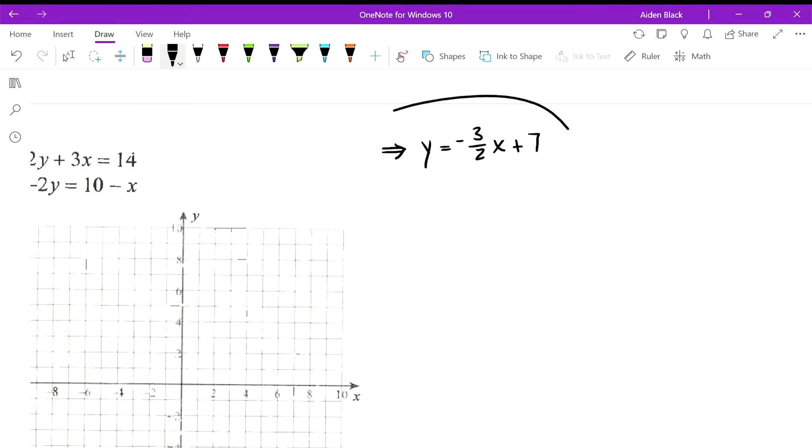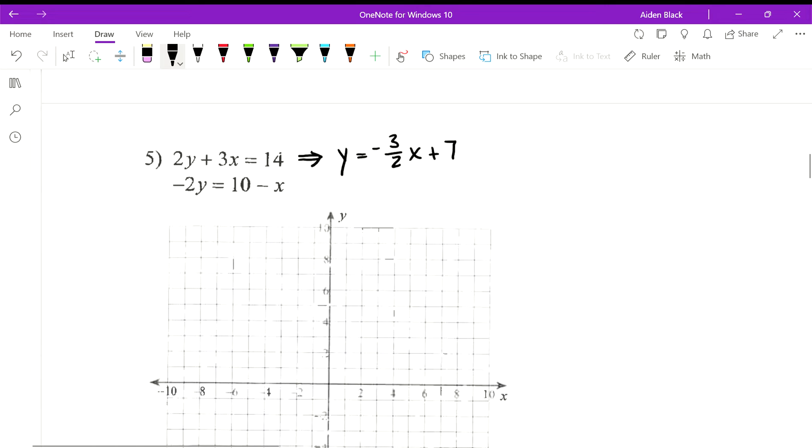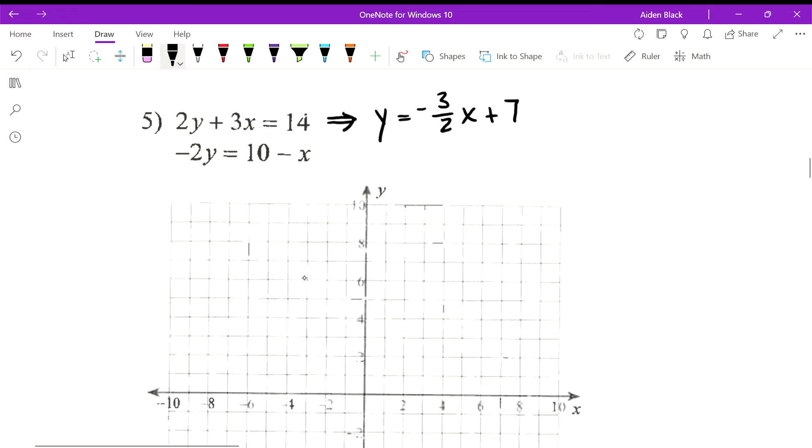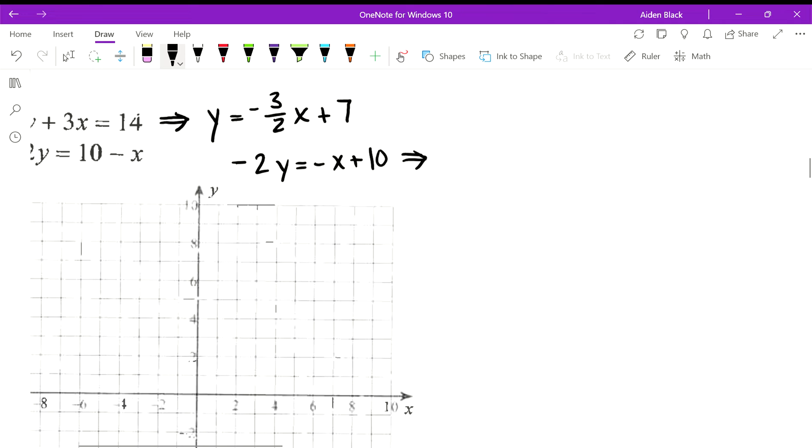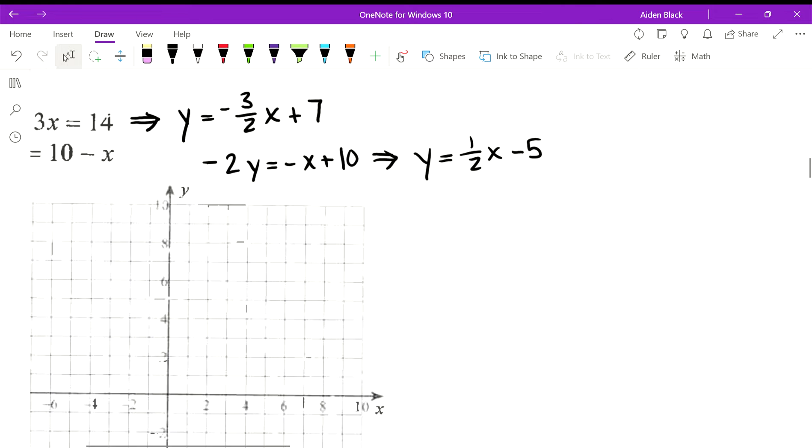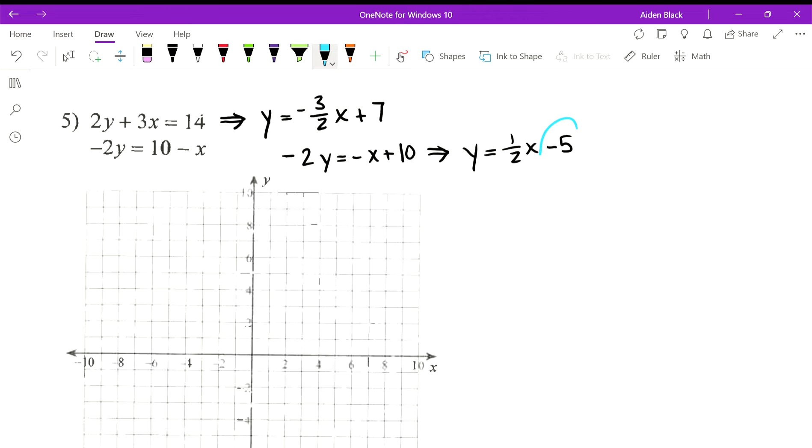And then from here we'll divide both sides by 2. Good. And then for the second equation, I'm going to switch the order of those two terms on the right-hand side like so, and then divide both sides by negative 2.